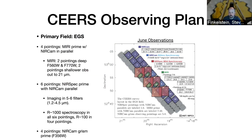We have ten NIRCAM pointings, and each one has either a red or a green-colored square or rectangle. Red square number one is the NIRSpec MSA spectroscopy happening at the same time as NIRCAM pointing one, and there's NIRSpec two through six. Then we have MIRI seven, eight, nine, and ten, happening at the same time as the corresponding NIRCAM pointings. There is also a cyan hatched region — those are the four NIRCAM pointings where we will be doing slitless spectroscopy. There's actually a MIRI five and MIRI six not shown here: at the time of proposing in 2017 you couldn't do parallels with NIRCAM grism spectroscopy, but now you can, and we did a change request that was approved to add MIRI to the NIRCAM grism exposures. So seven and eight will get a little deeper, and we'll add MIRI five and MIRI six.